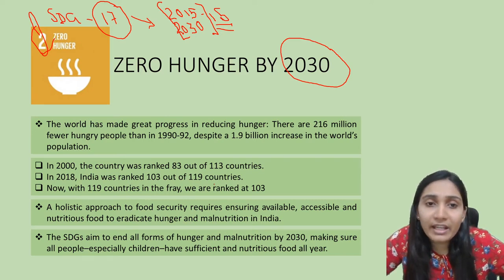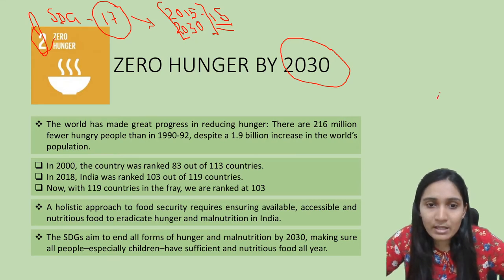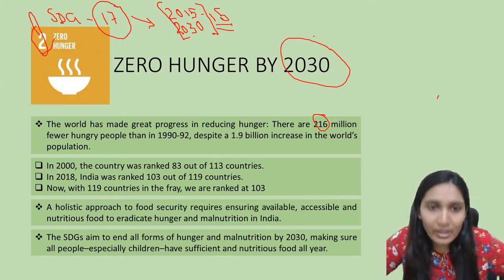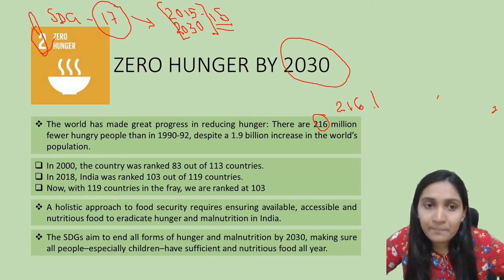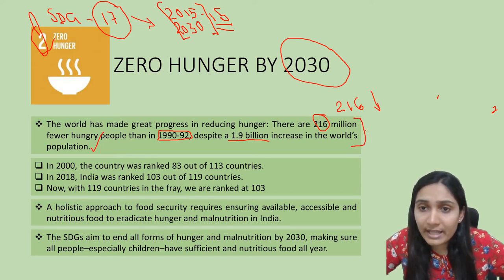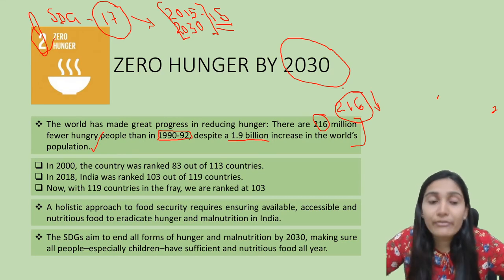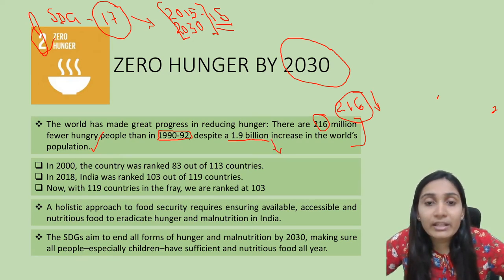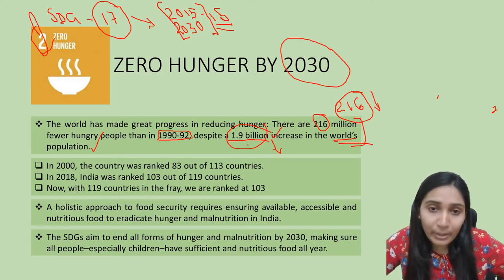The world has made great progress in reducing hunger. There are 216 million fewer hungry people than in 1990–92. We were able to achieve this reduction despite a 1.9 billion increase in the world's population. So the world reduced hunger by 216 million people at a time when the global population increased by 1.9 billion.